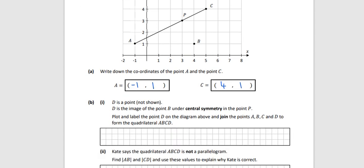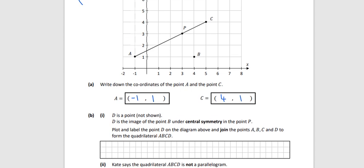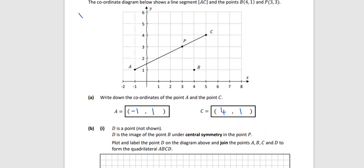D is the image of point B under central symmetry in point P. Point P is there. From B to P, that's one box to the left and two boxes up. I'll do the same thing again from P: one box to the left and two up, and that gets me to point D. Or you can use a ruler, go to P and then the same distance to the far side.